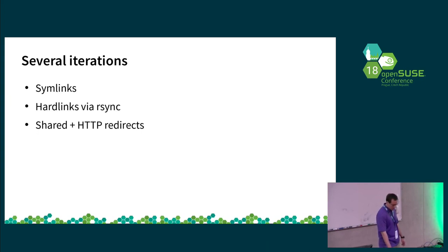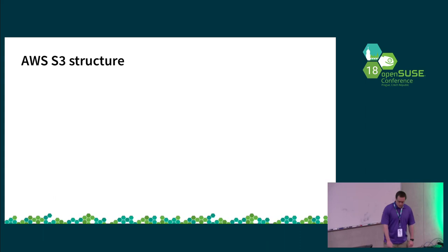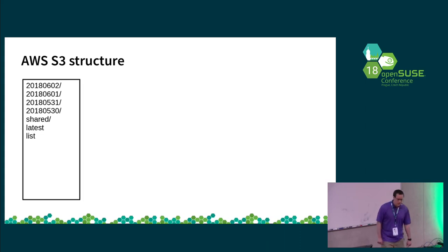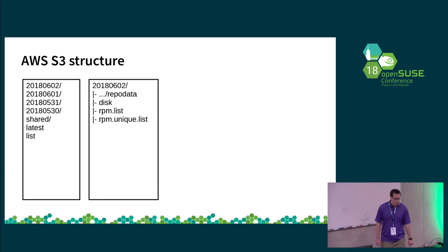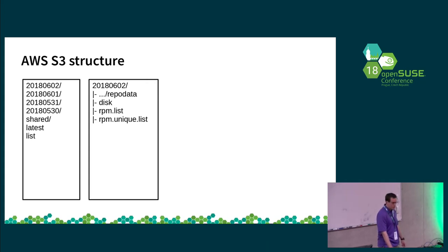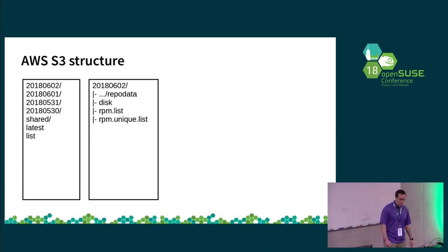The S3 structure basically has directories for each snapshot and a shared directory where all the actual RPMs are placed, plus a latest-and-list file which the command line tool accesses so you know which ones are available. The structure within an individual snapshot contains the most important pieces of the repo data — which is what Zypper requests when you run refresh to know what packages are available — along with some other files I generate: a disk file giving a rough idea of how much space that snapshot uses, and an RPM list and unique list.